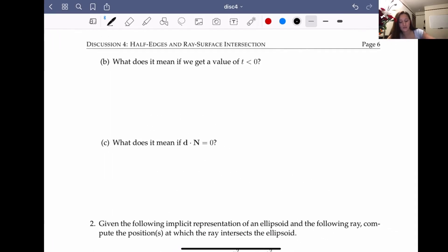Next question. What does it mean if we get a value of T less than 0? Okay, so let's take our ray equation. This is our ray equation. And let's think about what T means. So if T is 0, then our point is just the origin.